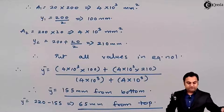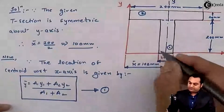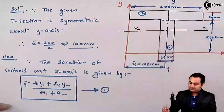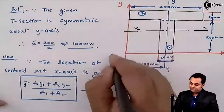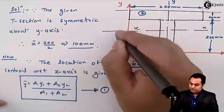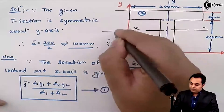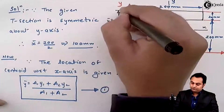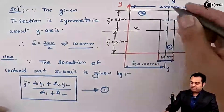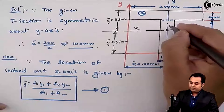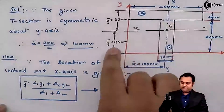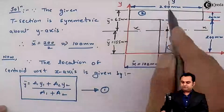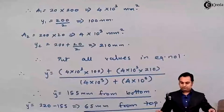The X-axis is located at y-bar = 155 mm from the bottom and 65 mm from the top. The Y-axis was already located at 100 mm. Here we have the centroid of the given T-section. Now that we have located the centroid, we can calculate the moment of inertia — first about the X-axis, then about the Y-axis.